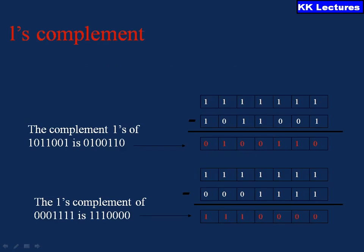For example, the 1's complement of 1011001 is found by subtracting each digit from all 1's, giving the result 0100110. By changing 1 to 0, 0 to 1, and so on, we get the 1's complement. Similarly, there is a second example you can observe as well.